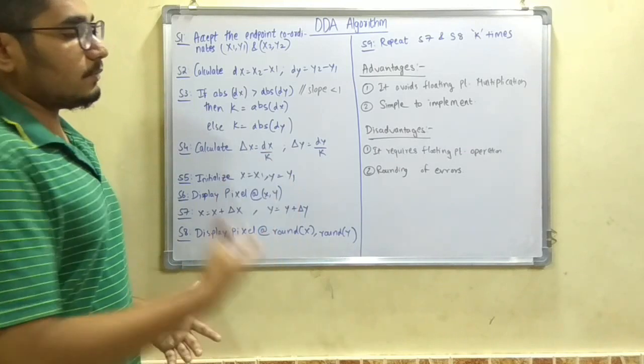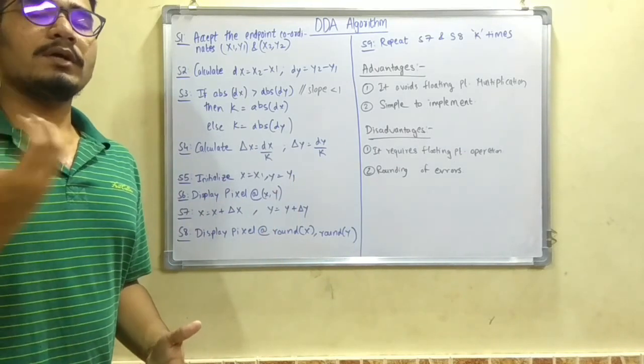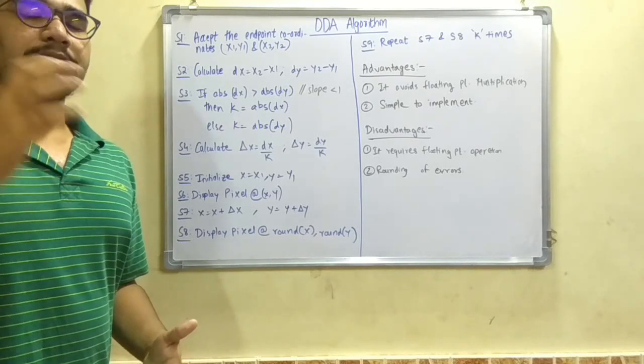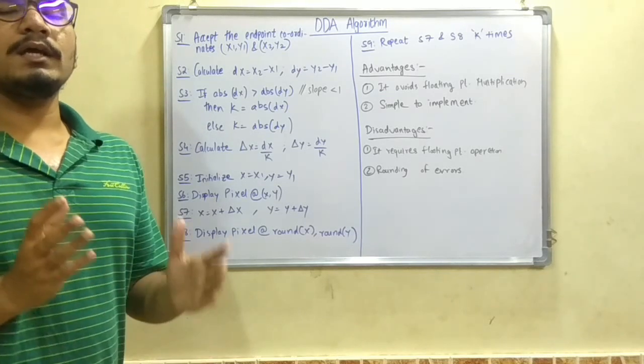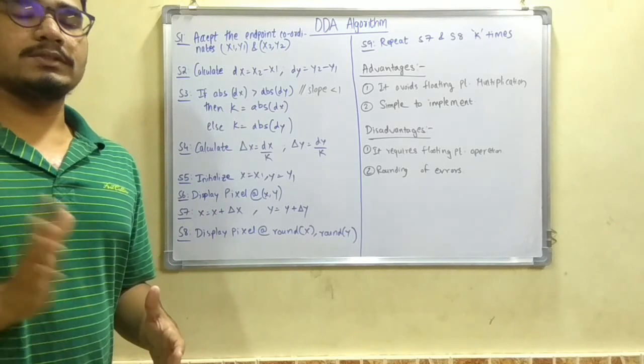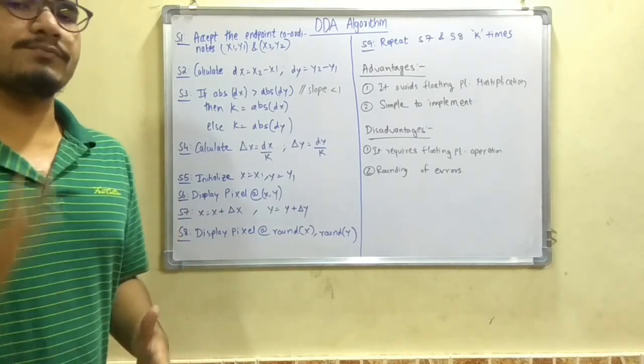So that will actually do the rounding of the error. So that rounding is basically you are ignoring those actual pixels. So that may actually shift a pixel from its actual position to some other position, and so you may get a distorted line or a slanting line instead of getting a straight line or the desired line which you expect from this algorithm.